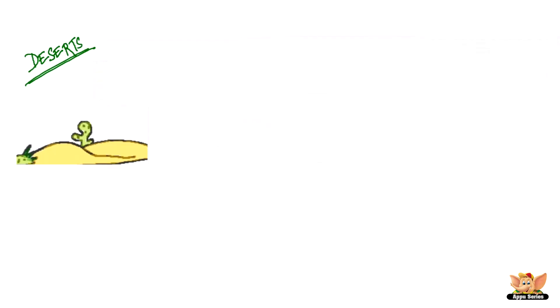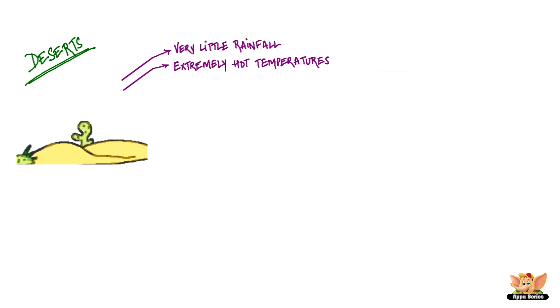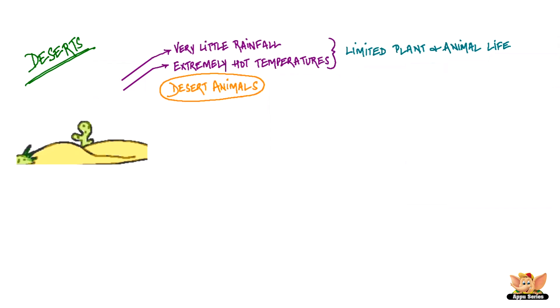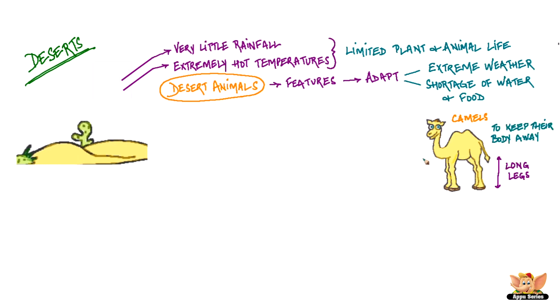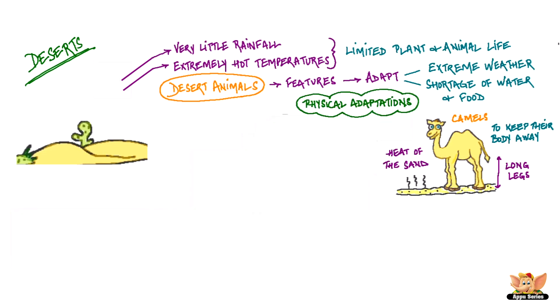The desert is a dry sandy land with very little rainfall and extremely hot temperatures. And because of these harsh conditions, there is limited plant and animal life in the desert. Desert animals have features that help them adapt to the extreme weather, shortage of water and food. For example, camels have long legs which help to keep their bodies away from the heat of the land. Camels are adapted to desert life and can go without food and water for many days. There are physical adaptations in their body that help them survive in the harsh desert conditions.